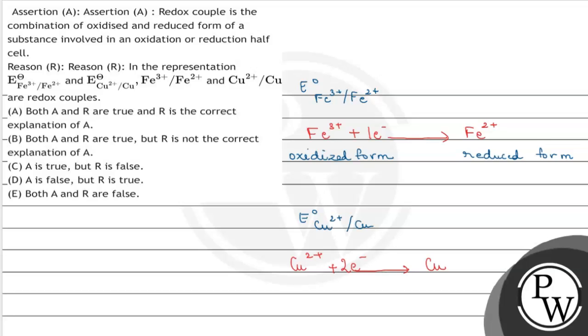So copper in elemental form is the reduced form. And if elemental form loses two electrons, what form will be formed? It will form Cu2+. That means Cu2+ is the oxidized form.